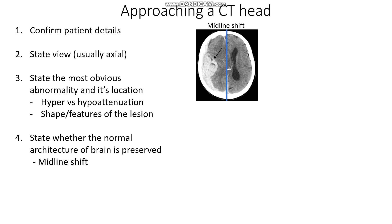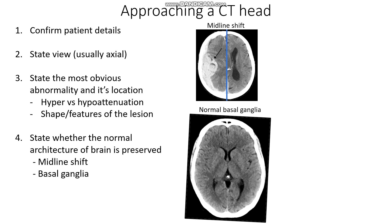The next thing I'd like to examine are the basal ganglia. The basal ganglia are structures which are very important in initiating and coordinating movement, and often in conditions such as lacunar strokes these structures may become infarcted. If we look at the basal ganglia here, we can spot three structures: the head of the caudate nucleus, then the thalamus, the lentiform nucleus, and the internal capsule — all of these structures together form the basal ganglia. Any loss of white-grey differentiation suggests there might be a stroke in this area.